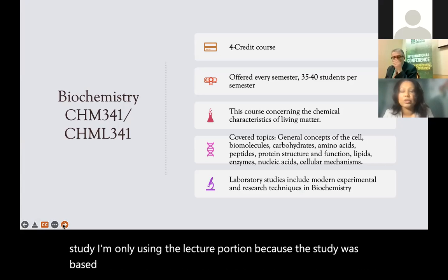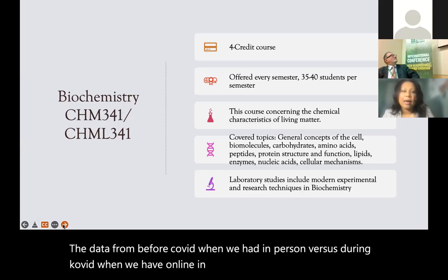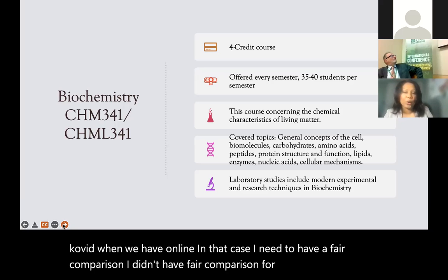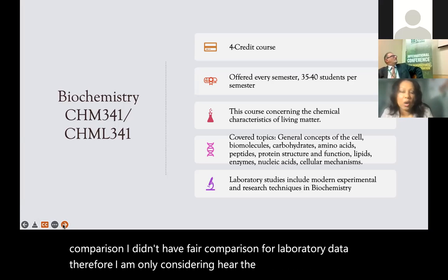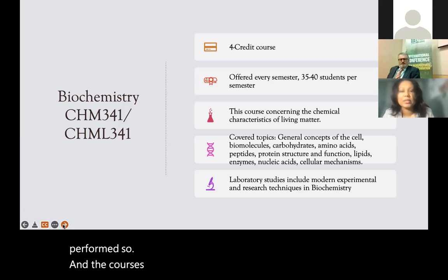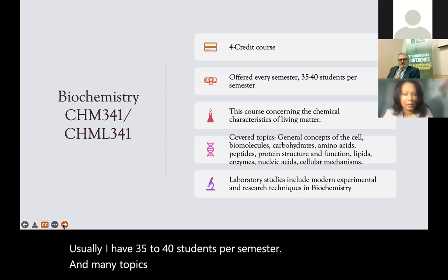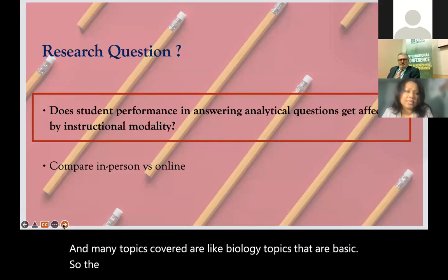The study is based on pre-COVID student performance data, comparing in-person versus online during COVID. I needed a fair comparison — I didn't have fair comparison for laboratory data, so I only considered lecture exam performance. The course is offered every semester, typically with 35 to 40 students, and covers basic biology and biochemistry topics.